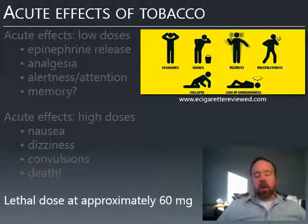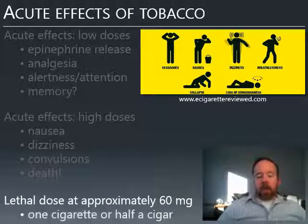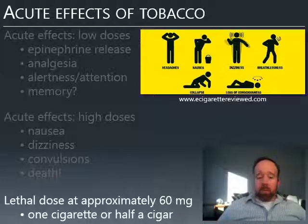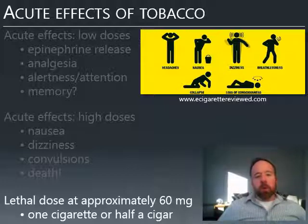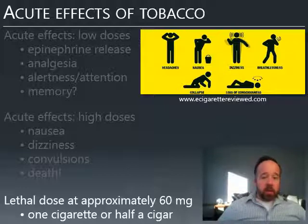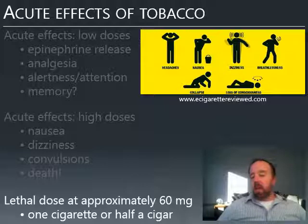Technically, the lethal dose of nicotine is approximately 60 milligrams — the amount contained in a single cigarette or half a cigar, meaning a cigar contains two lethal doses. But you never really get all that nicotine in your system, and you're not absorbing it all at once. A lot of the nicotine is not absorbed into the blood — it's in the smoke, and that smoke is exhaled as well. That secondhand smoke also contains nicotine.